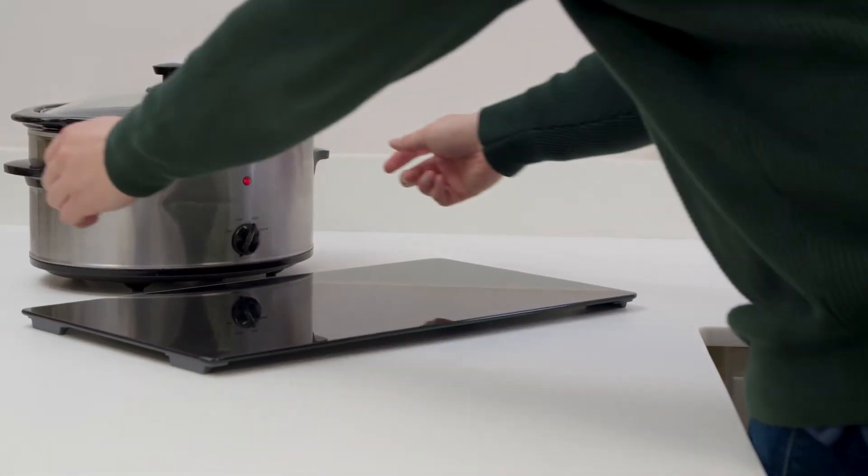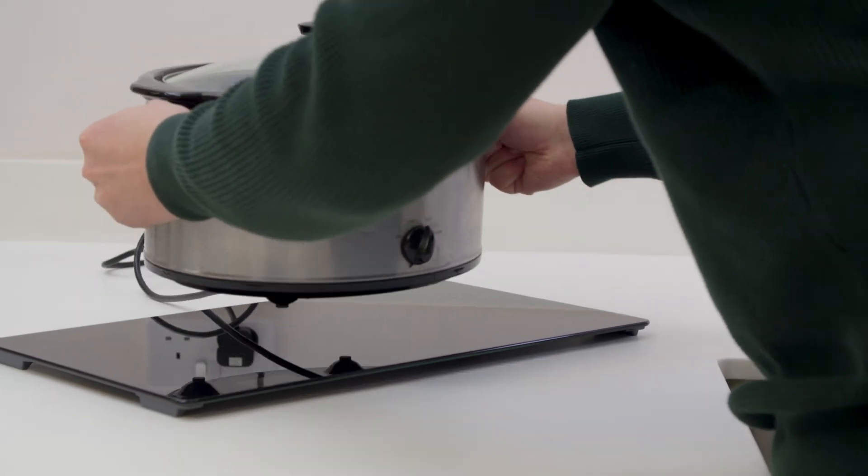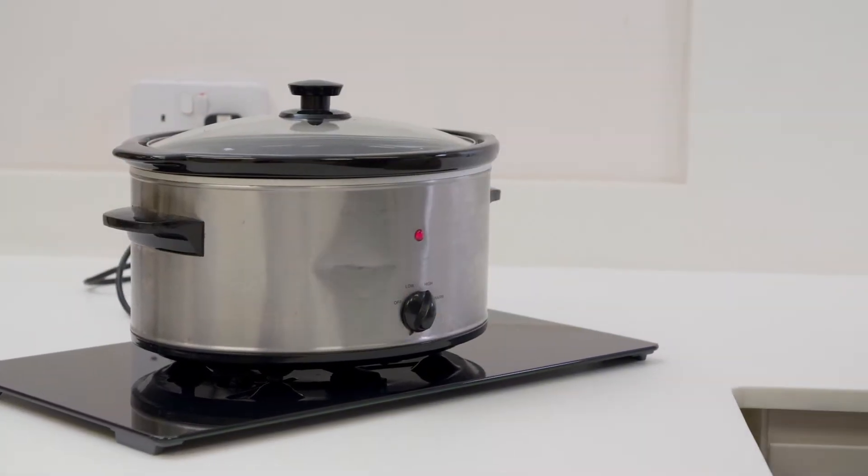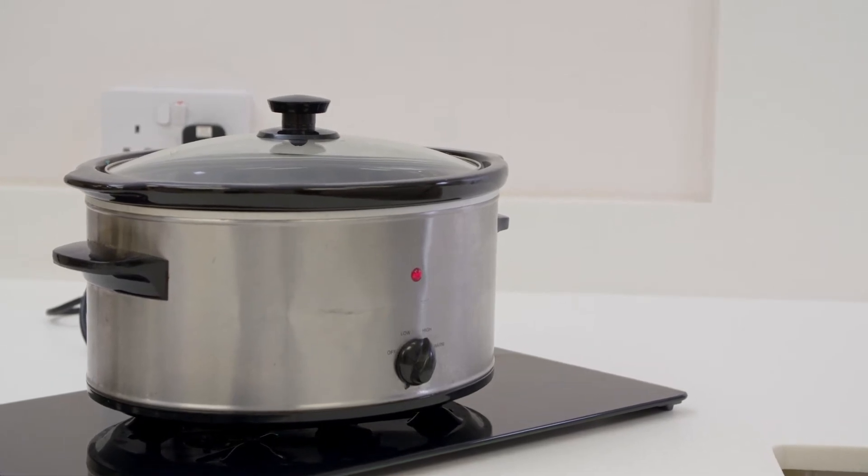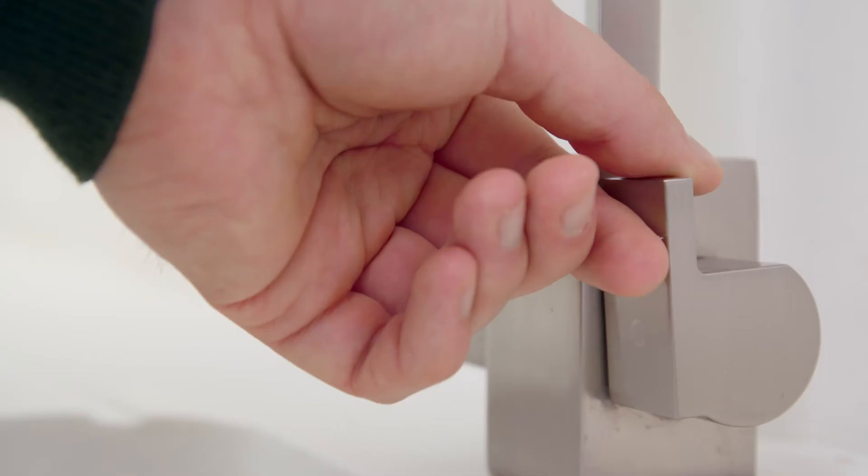Always position all portable cooking appliances such as the slow cooker shown here on a glass worktop saver. This will protect your Mirrorstone surface from excessive and sustained heat.